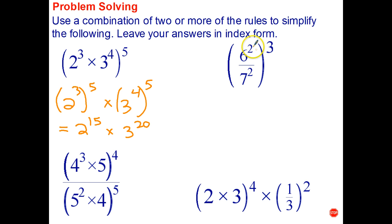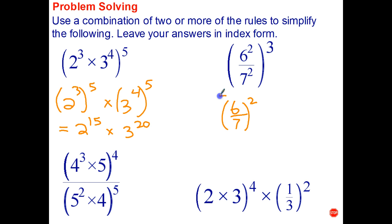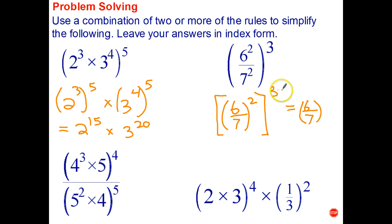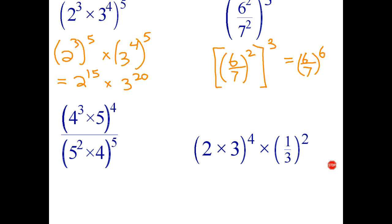For this one, notice that the powers are the same, so I'm going to use index law 4 in reverse. We can write 6 squared over 7 squared as (6/7) all squared — normally we go from that fractional form to that split form, but we can reverse it. Then all of that is raised to the power of 3. Now we're raising a power to a power, so that becomes 6 over 7, all to the power of 2 times 3, which is 6.